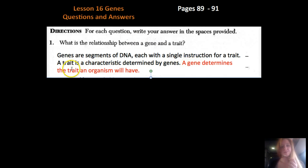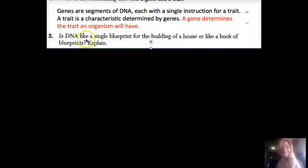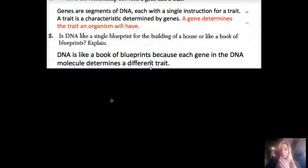Number two: Is DNA like a single blueprint for the building of a house, or like a book of blueprints? Explain. Is it just one blueprint or many? Is it like a single set of instructions or a lot of sets of instructions? DNA is definitely like a book of blueprints because each gene in the DNA molecule determines different traits. Think about all that has to go into the shape of your eyes, your nose, your mouth, never mind your internal organs. You need like a book.